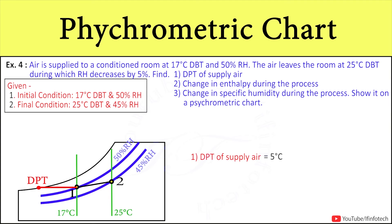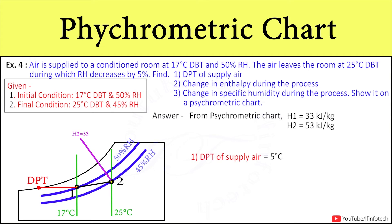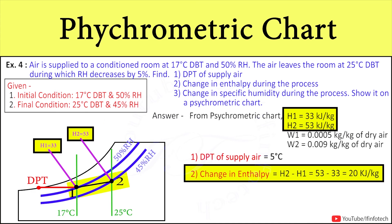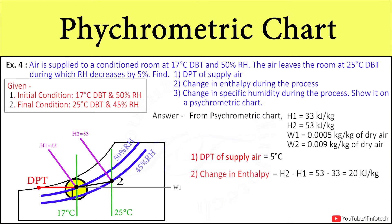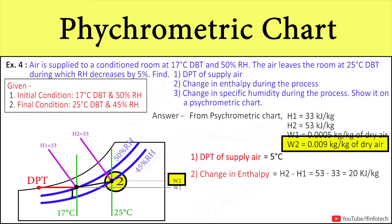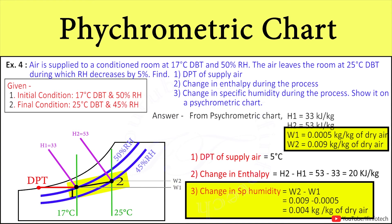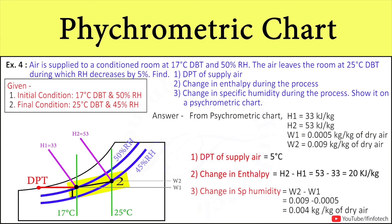Enthalpy at point 2 (h2) is 53 kJ/kg and enthalpy at point 1 (h1) is 33 kJ/kg, giving the change in enthalpy for process 1 to 2. For specific humidity: w1 at initial condition is 0.0005 kg/kg of dry air, and w2 at final condition is 0.009 kg/kg of dry air. From w1 and w2, we get the change in specific humidity during process 1 to 2.